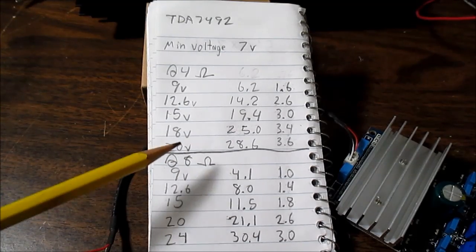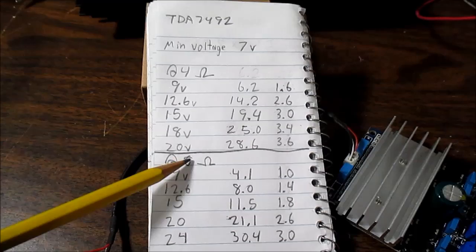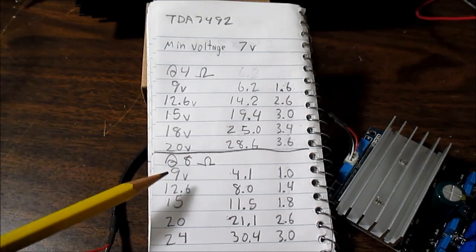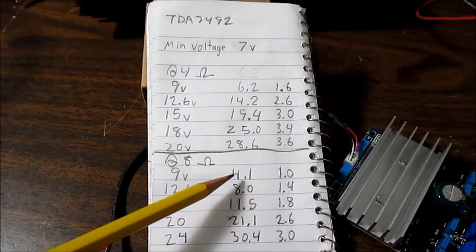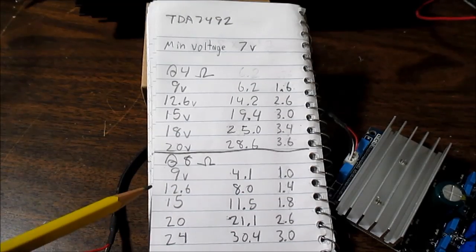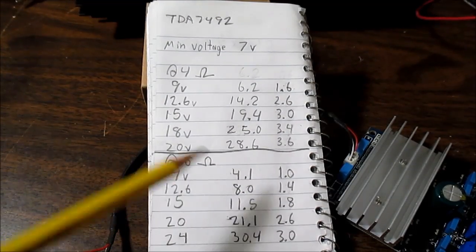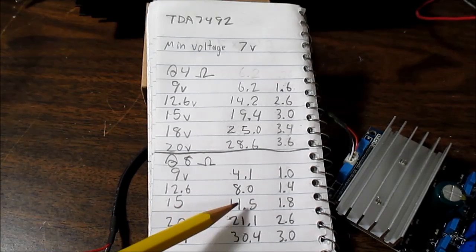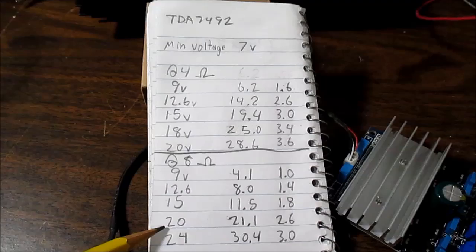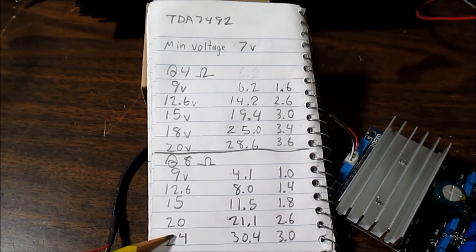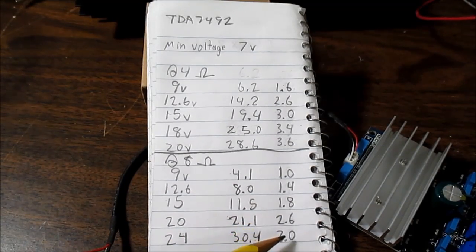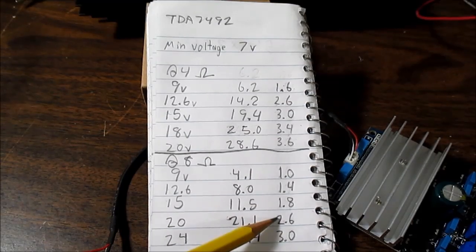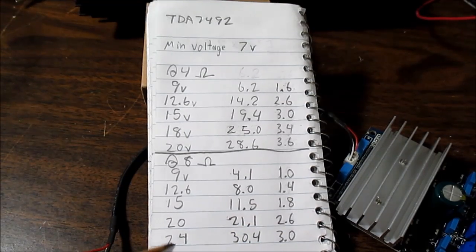Okay, so then I did some 8 ohm load measurements. At 9 volts I got 4.1 watts. 12.6 volts, I got 8 watts. 15 volts, 11.5 watts. And with 8 ohm loads I can use the higher voltages because the current draw is not as severe as with 4 ohm loads.